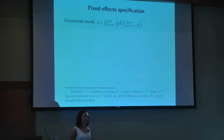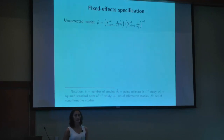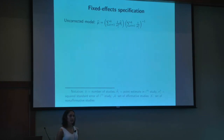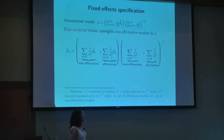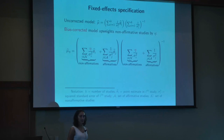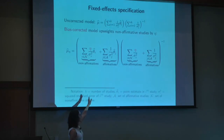Let me show a little of the math for the fixed effects case, which I think is illustrative in terms of intuition. A fixed effects meta-analysis takes an inverse variance weighted average of the point estimates across studies. Now if I actually knew what eta was — say, eta equals 10 — it would actually be quite easy to bias-correct this model using an approach known as inverse probability weighting. I take the studies in my meta-analysis, split them into affirmative and non-affirmative, and refit the estimator while up-weighting all of the non-affirmative studies by a factor of eta — in this case, 10 — to re-achieve the balance that should have existed prior to publication bias.